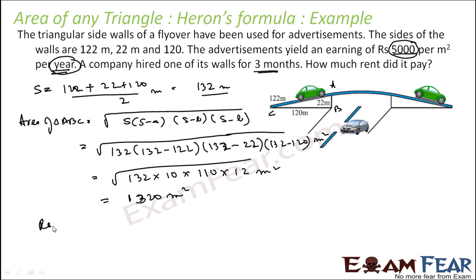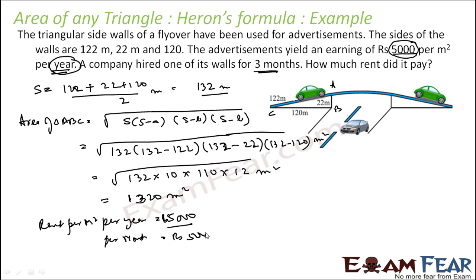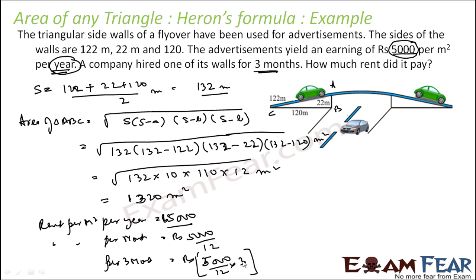Now, the rent per meter square per year is ₹5000. Please pay attention — this rate is per year. So per month it will be 5000 divided by 12. And for three months we multiply by 3. This gives us the rent per three months per meter square.